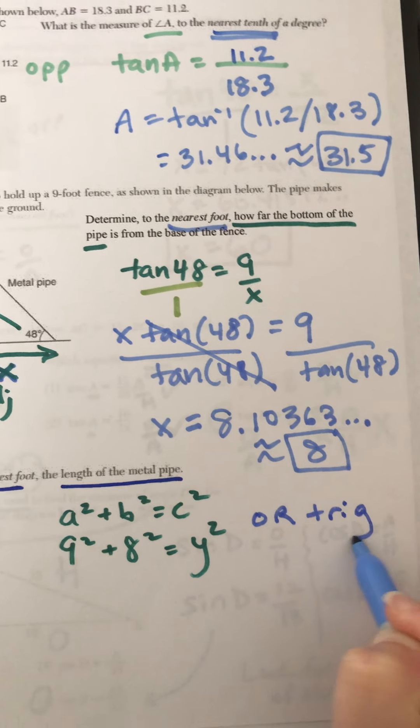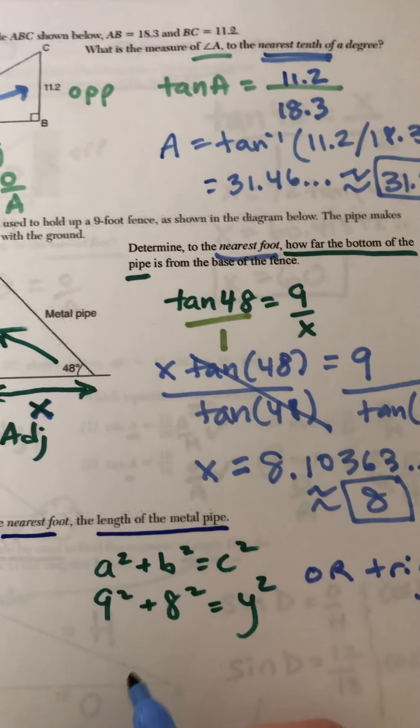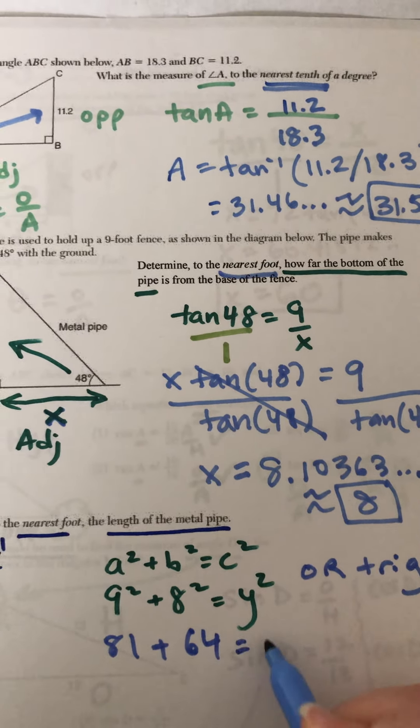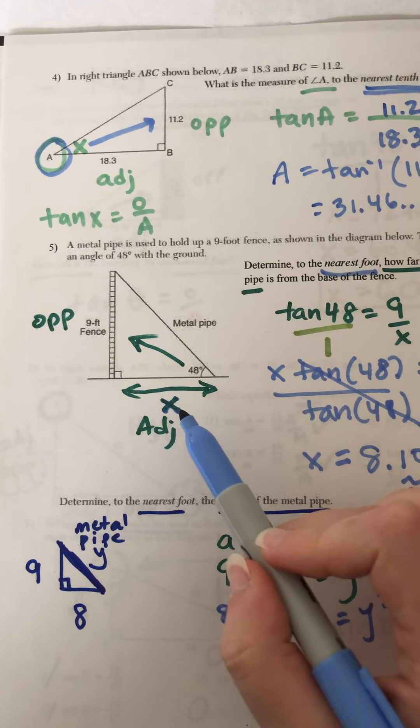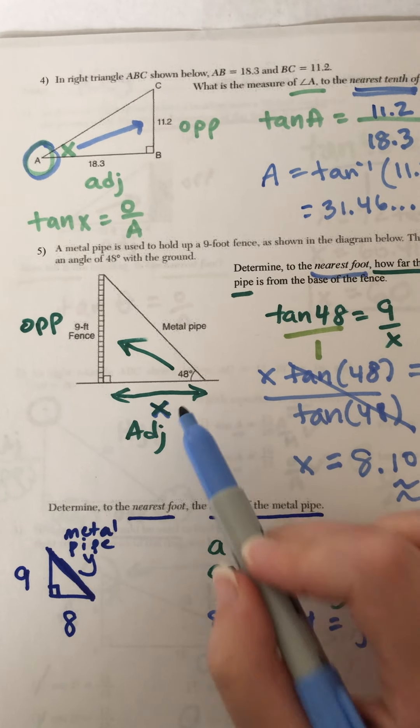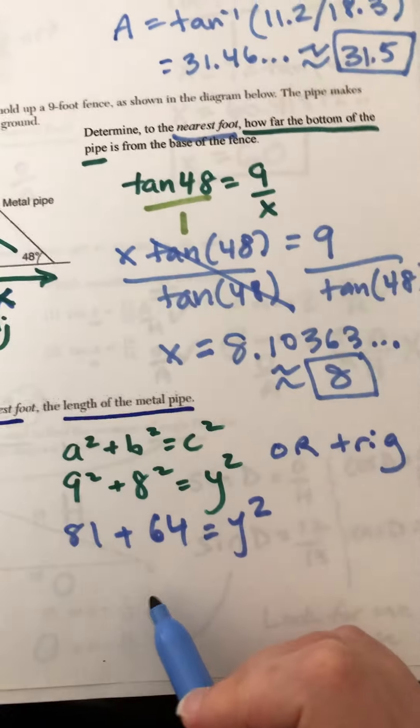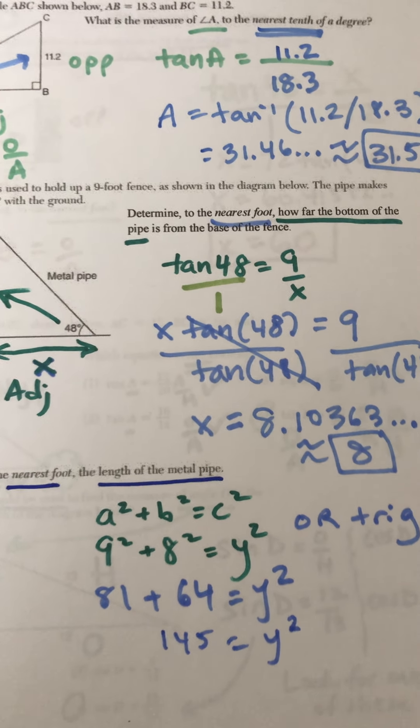That is the hypotenuse. We can do Pythagorean theorem or trig, but we might as well do Pythagorean theorem. It's nice and easy. 9 squared is 81. 8 squared is 64 is Y squared. Side note, use a different variable here than you do up there. The X side is the adjacent. The metal pipe is a new variable. That's why. Okay, added together, you get 145 is equal to Y squared. We square root both sides.